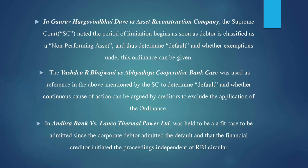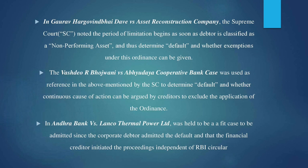Impact can also be ascertained via certain cases with respect to this ordinance. In the case of Gaurav Hargubind Baidave versus Asset Reconstruction Company, the Supreme Court noted that the period of limitation begins as soon as the corporate debtor is classified as a non-performing asset, and thus determined default and whether exemptions can be made under this ordinance. The Vashudev R. Bhojwani versus Abudabi Cooperative Bank case was used as reference, wherein the Supreme Court noted default and whether a continuous cause of action can be argued by creditors to exclude the application under the ordinance. Furthermore, in the case of Andhra Bank versus Lanco Thermal Power Ltd, it was held to be a fit case as the corporate debtor admitted the default and the financial creditor initiated proceedings outside the RBI Act Circular.